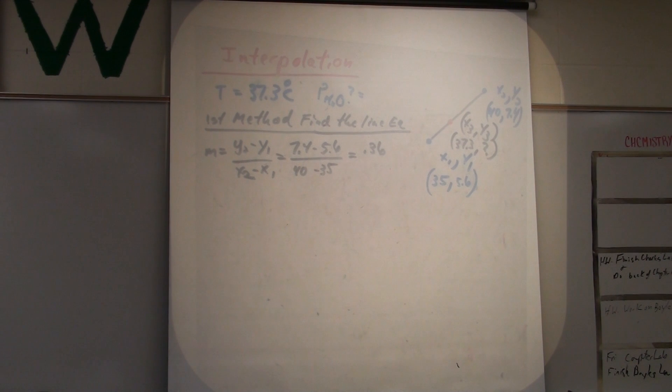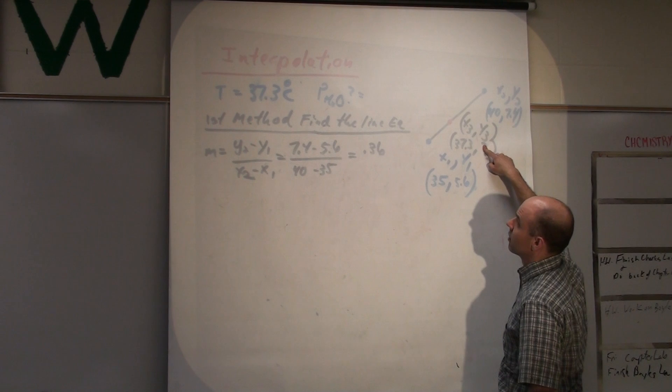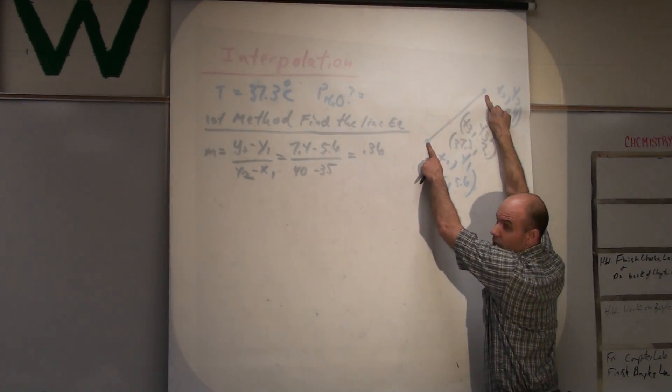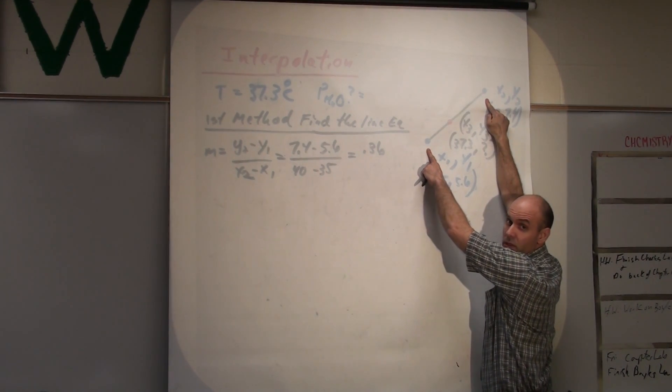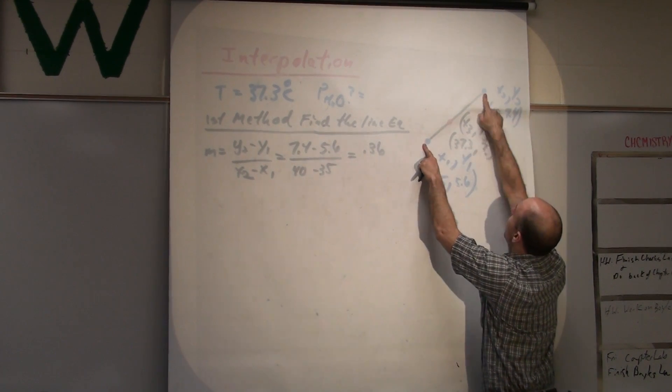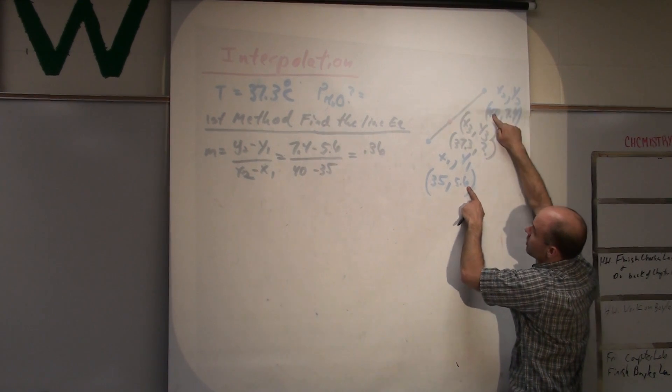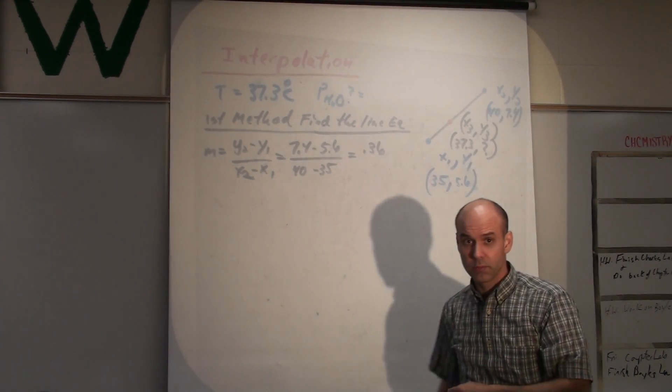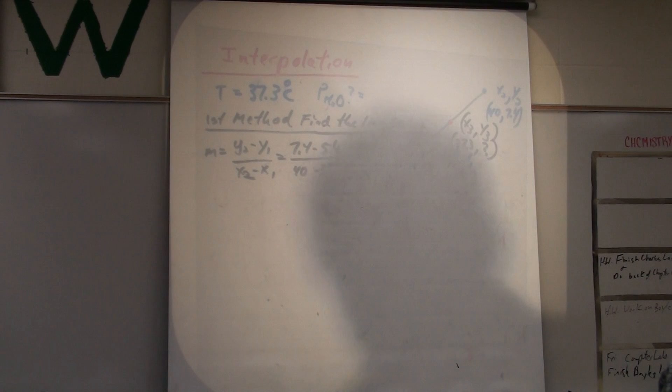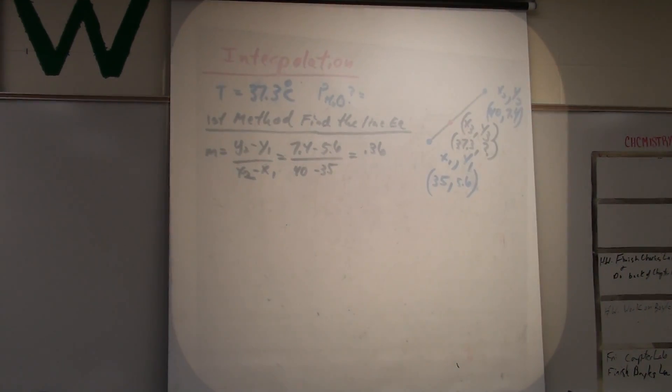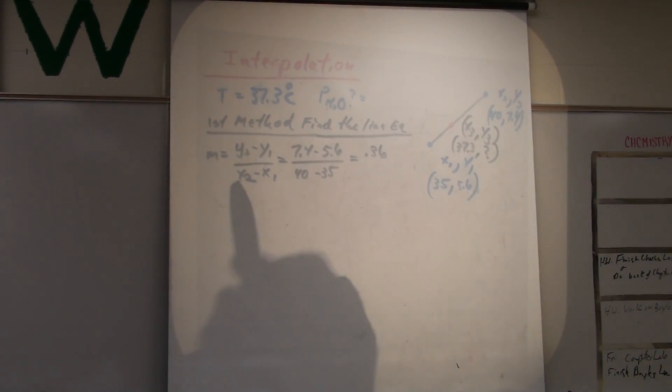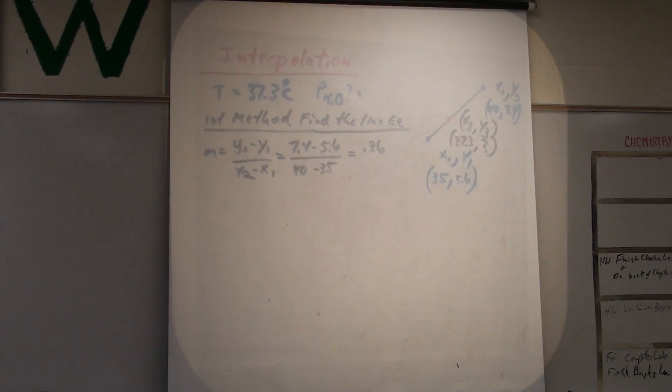For the slope, why do you take Y2 again on the line? Because I don't know this value. I don't know Y3. So, I take these two points because I know the values of those two points. So, I know X1, Y1. I know X2, Y2. So, I take 7.4 minus 5.6 and 40 minus 35. Oh, you're talking about over here. Yeah. Well, that's an X.